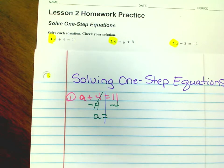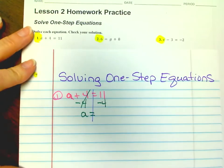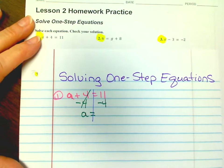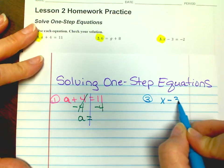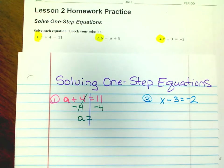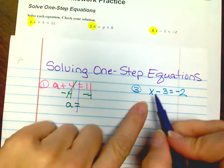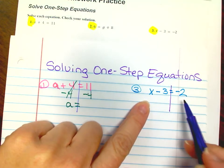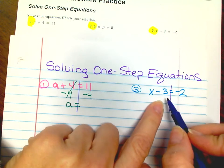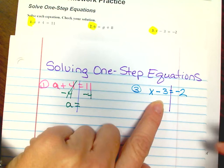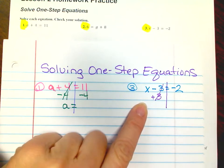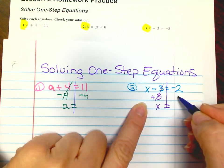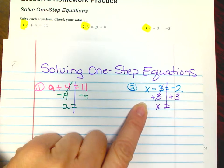Let's look at number 3. I know I'm skipping around, but you can pause the video and go back and do number 2. You have x minus 3 equals negative 2. I'm going to find my variable, which is x, and draw a line down the middle so I know I have two sides. If it's a negative 3, to get that to 0 I need to add 3. That cancels it out to 0, leaving x. So whatever I do to this side, I have to do to this side — add 3 — and you will have your x.